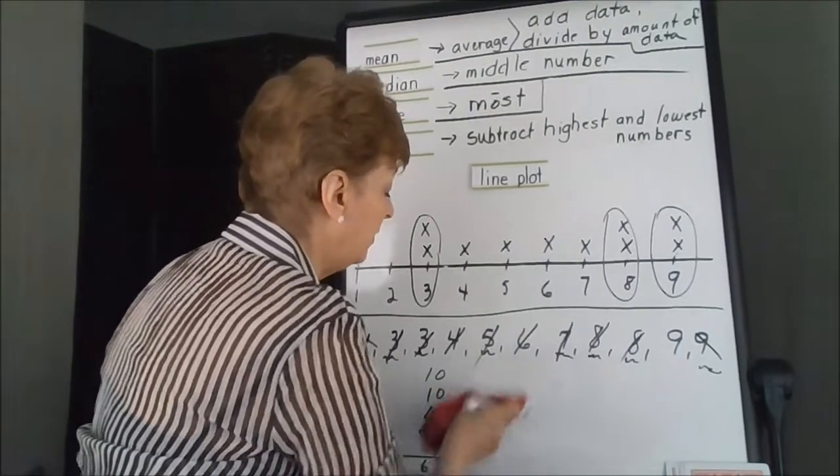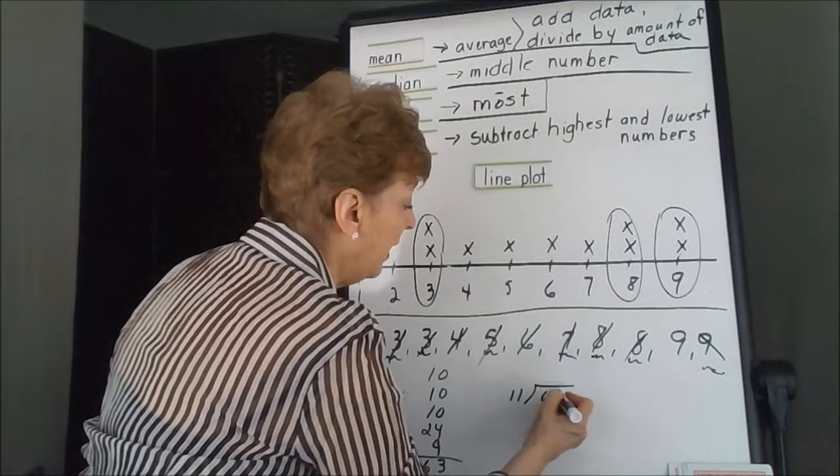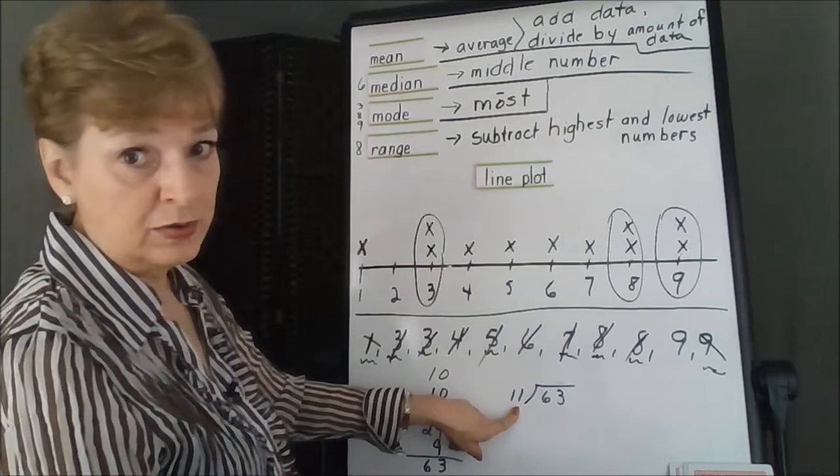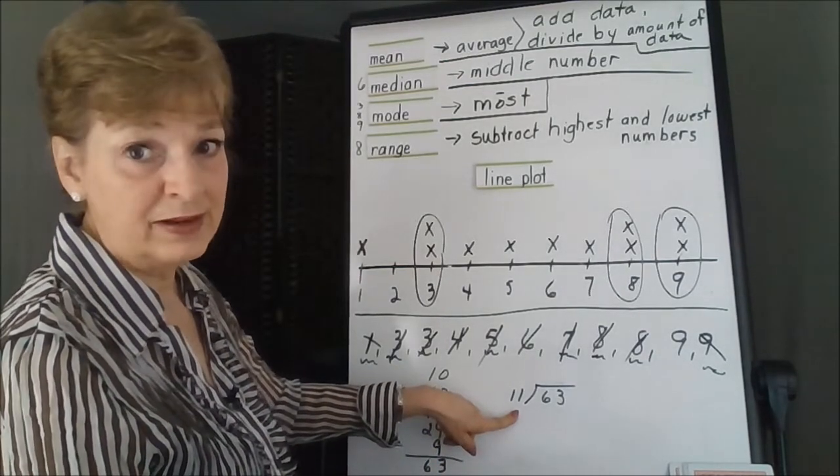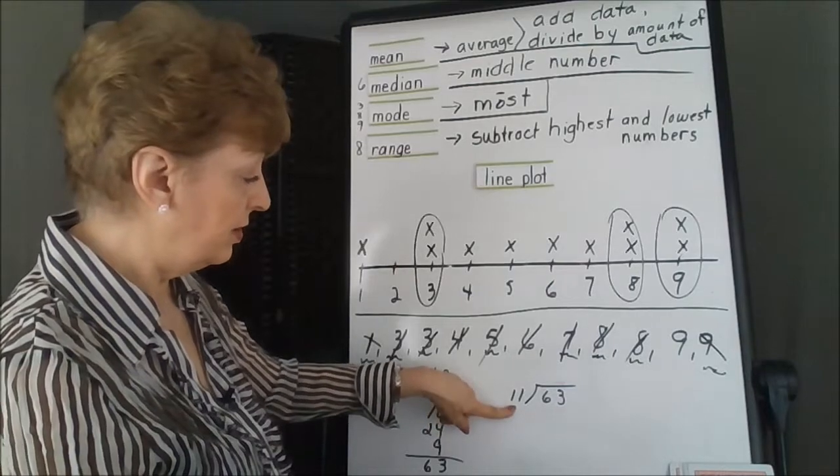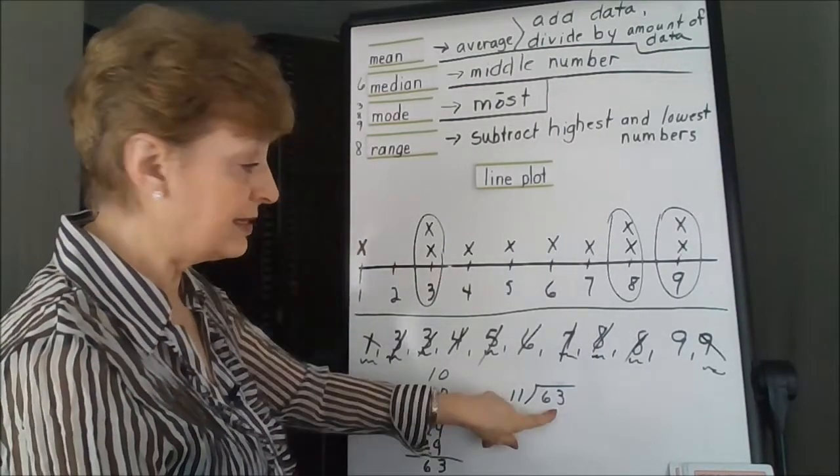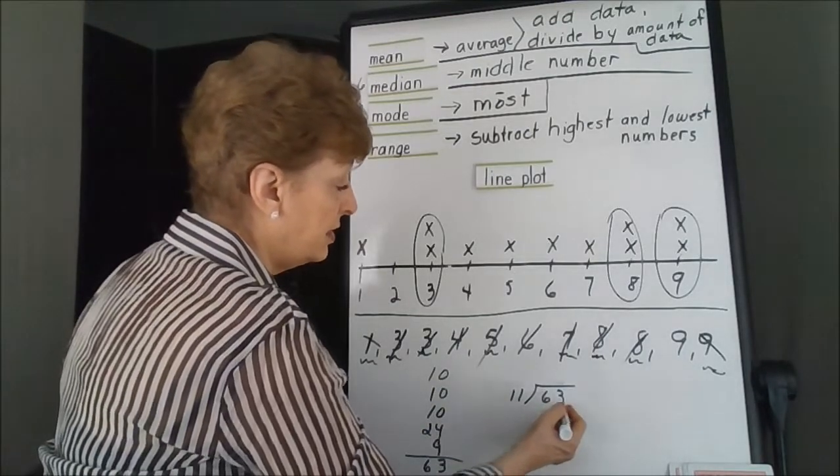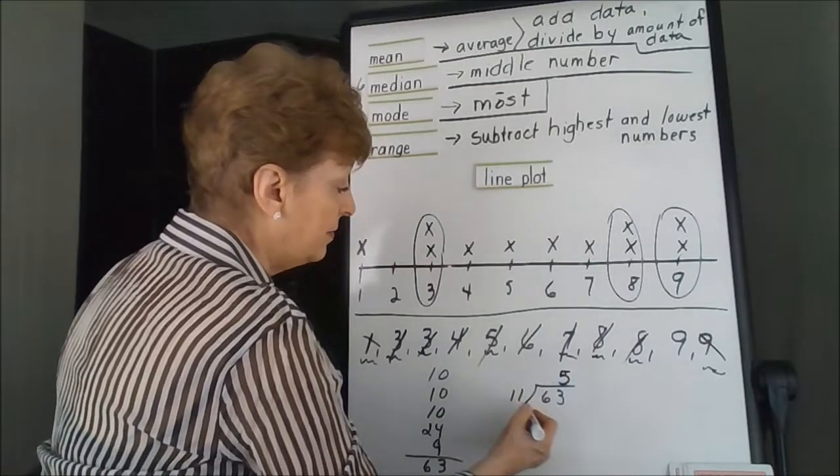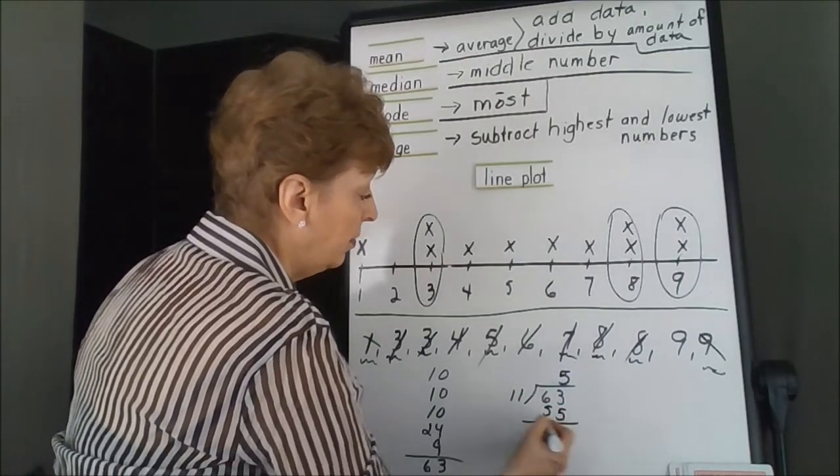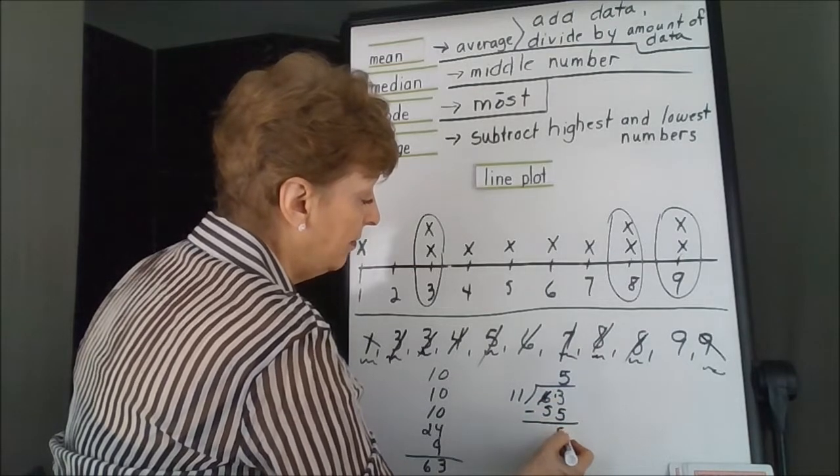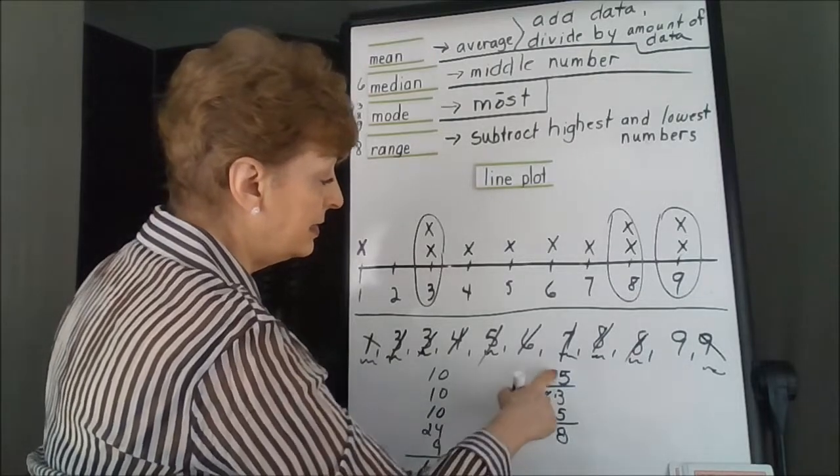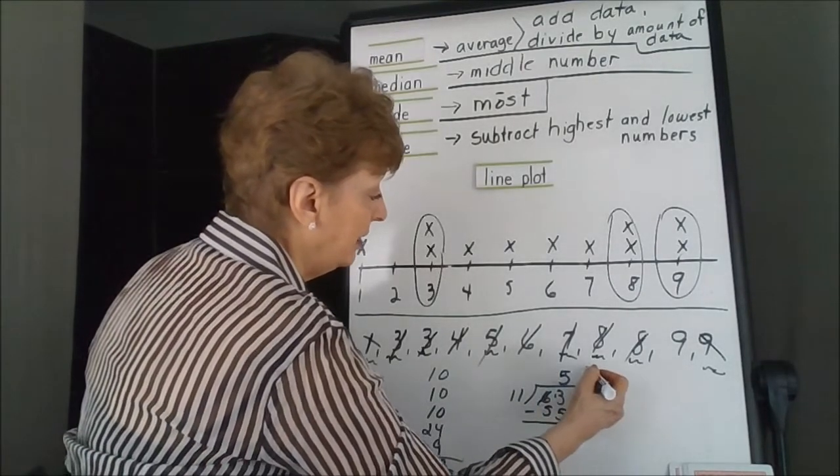How many 11s can we get into 63? Well, you know that when you have multiples of 11, you would have doubled numbers. So 11 times 6 would be 66. Well, that's a little bit high. So 11 goes into 63 5 times. 5 times 11 is 55. We will get a remainder on this of 8. So our middle number is 5 and 8 elevenths.